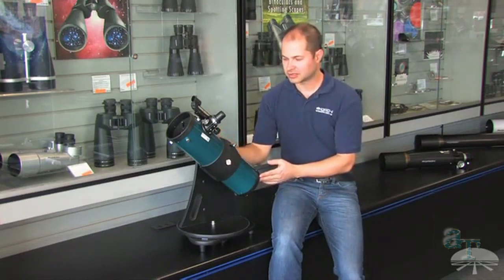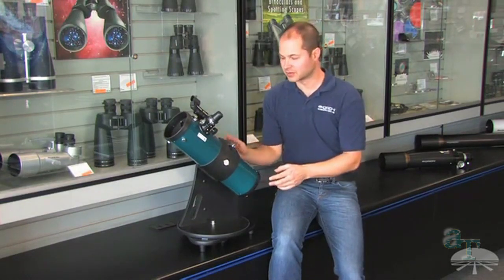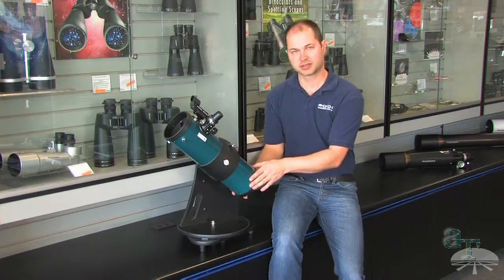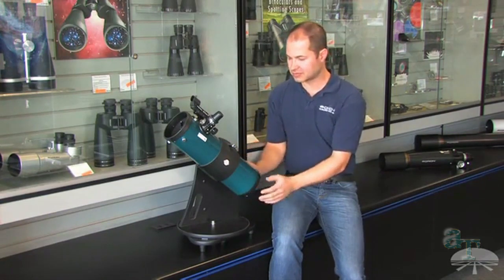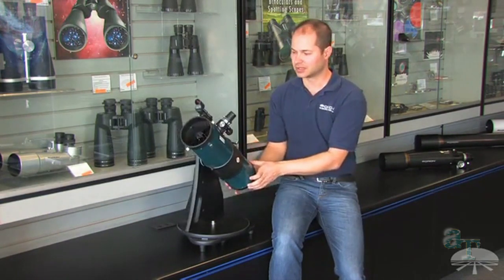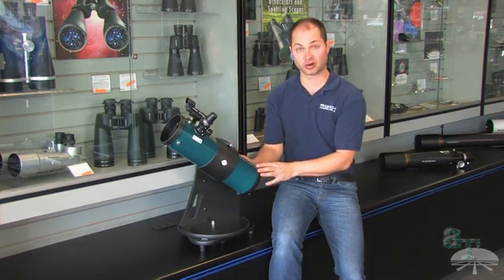Hello, I'm Ken from Orion and this is the Starblast 4.5 Reflector Telescope. It's a four and a half inch reflector on an Altaz mount, so it just swivels up and down, left and right. And this is really the definition of portable.